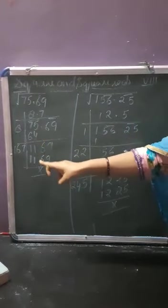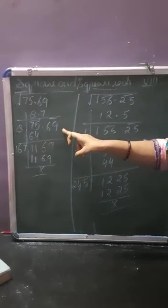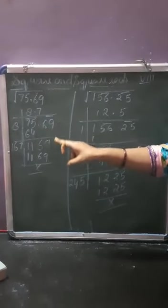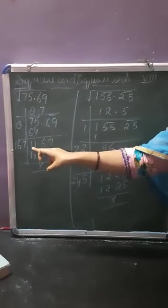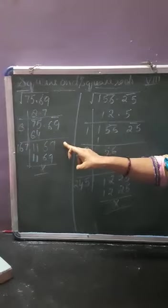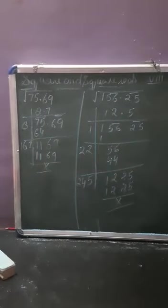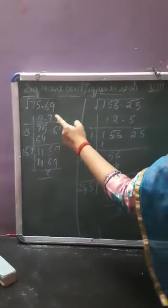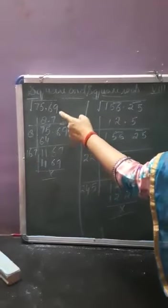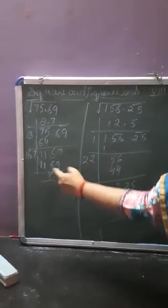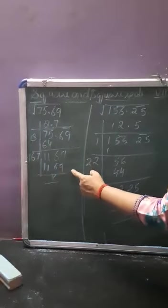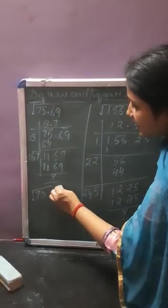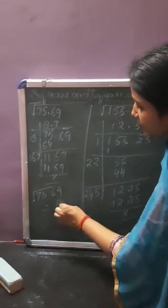75 minus 64 is coming 11. Now you copy down the next pair, which is 69, so it becomes 1169. The point goes here since we are now solving the decimal part. By which number should you multiply? It will be 7. So 167 multiplied by 7 gives 1169. The square root of 75.69 is equal to 8.7.